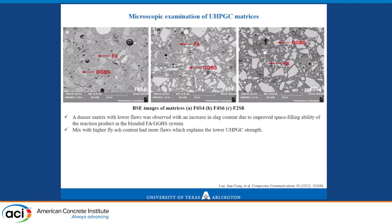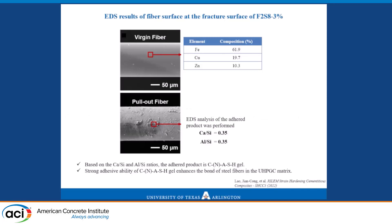SEM pictures with different amounts of fly ash or slag are shown here. When you have the highest amount of slag, the material is clearly more dense. We also found from energy dispersion analysis of plain and pulled-out steel fibers that based on calcium silica and alumina silica ratios, there was quite a bit of a combination of C-A-S-H and N-A-S-H on the fiber surface. This means the bond was substantially improved, as evidenced by the pull-out behavior.